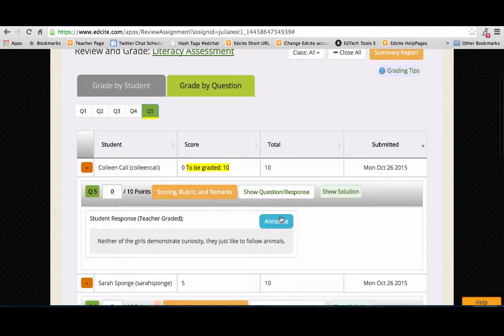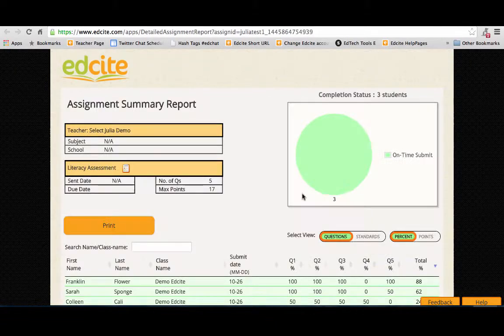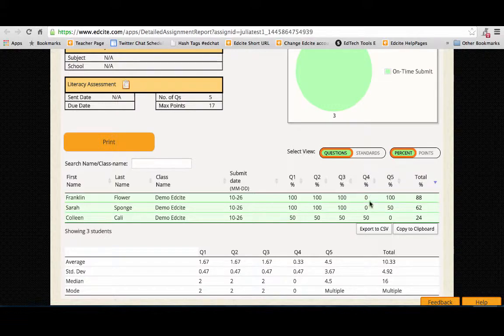Now let's say we've gone through, we've done all of our grading. We can go into the summary report to get more of a bird's eye view. I can go through and see what are the averages per question. I can see by looking at this that question four is one that I need to go over with the entire class.